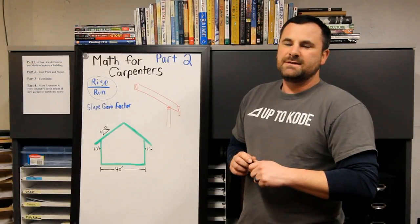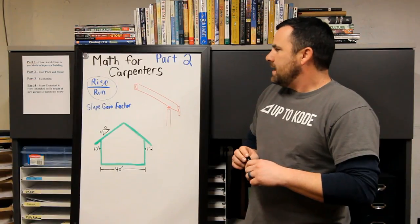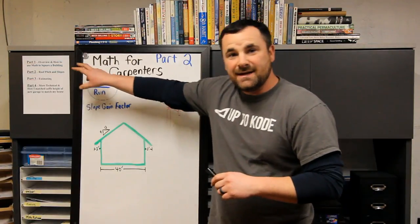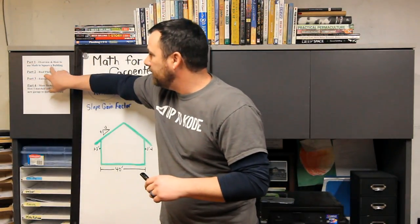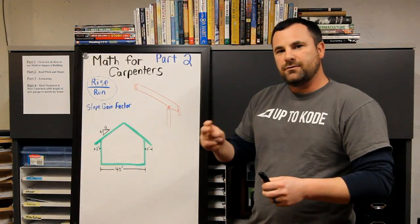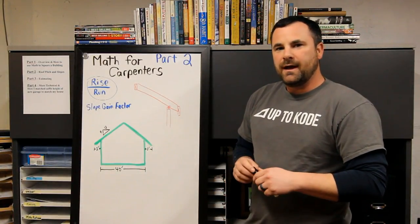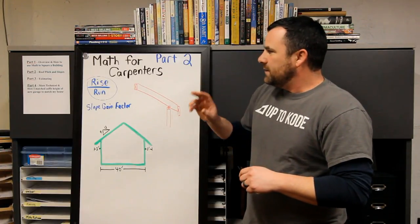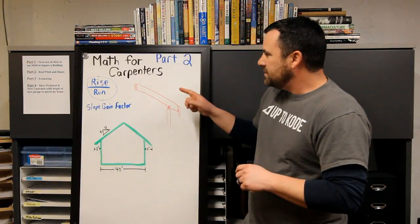So this is part two for my series of Math for Carpenters. In part one we went through how to square a building using the 3-4-5 method or Pythagorean theorem. If you want to see that, check out part one.